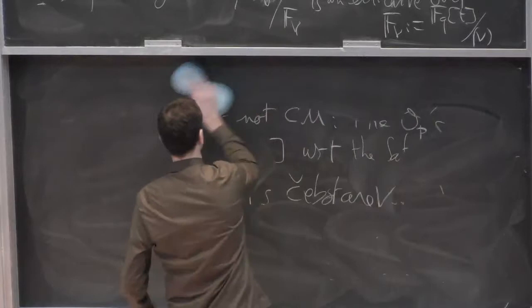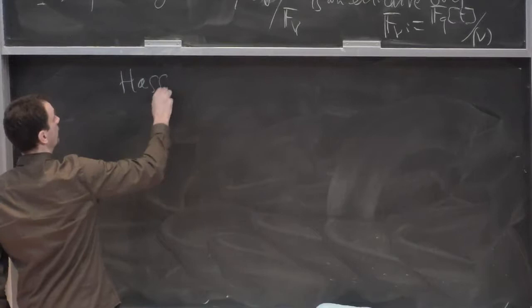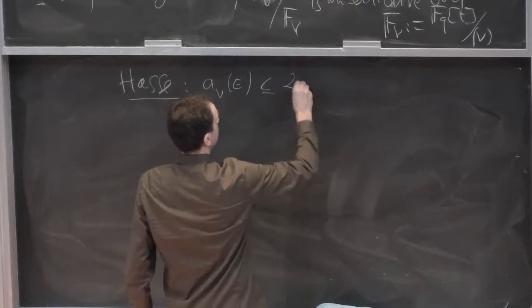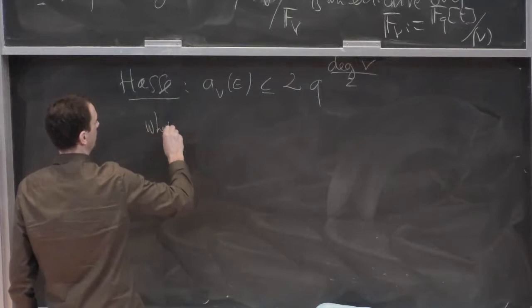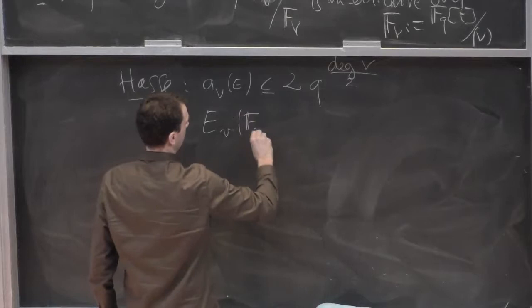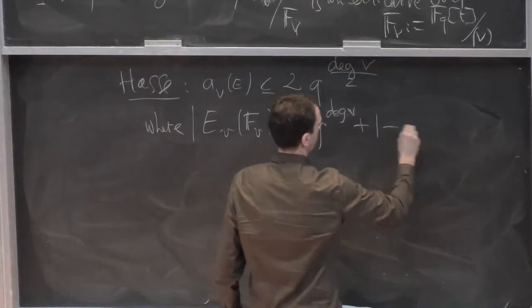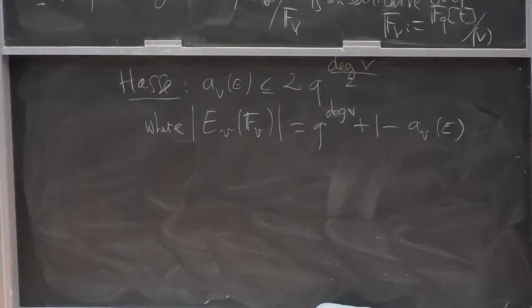And so now we are back to elliptic curves over finite fields. So we have a Hasse bound. Less than 2 q to the degree of v over 2, where E_v, |E_v| is q to the degree v. So that's 1 minus a_v.